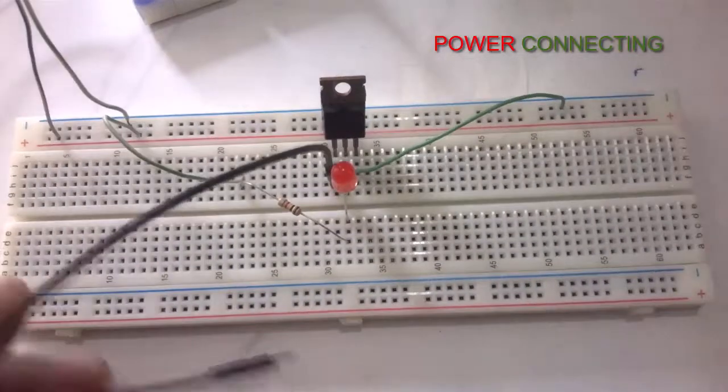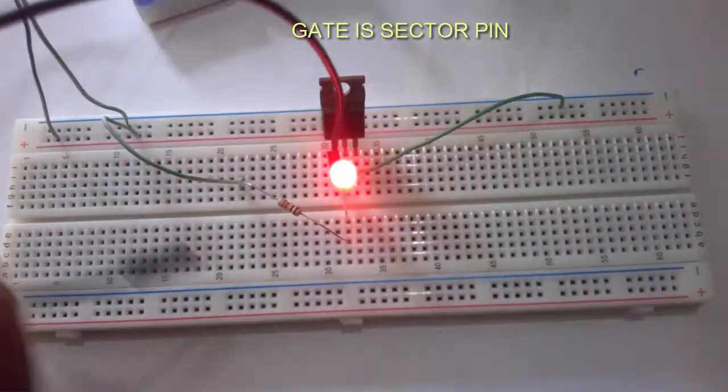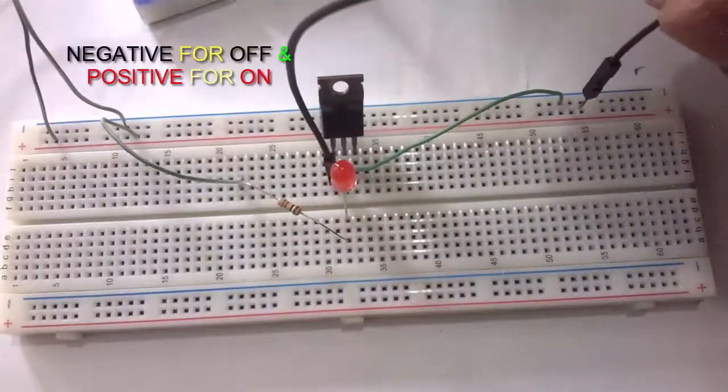Now connecting power to the circuit. From my hand it's getting current, so the MOSFET becomes ON.